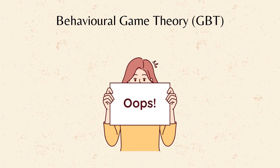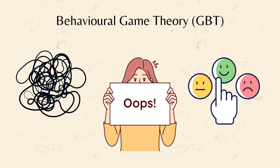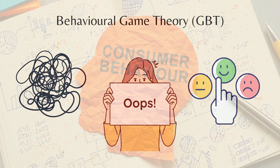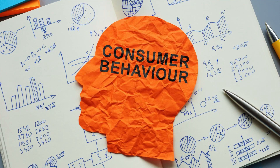Behavioral Game Theory, on the other hand, takes a more realistic approach. It acknowledges that people have limited information processing capabilities, can make emotional or biased choices, and may be influenced by social norms, fairness considerations, and even quirks in our thinking.